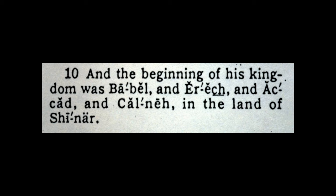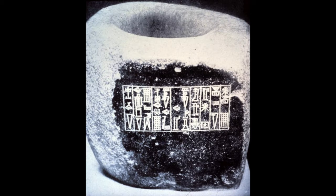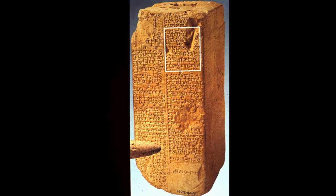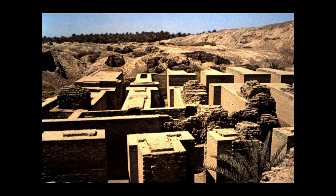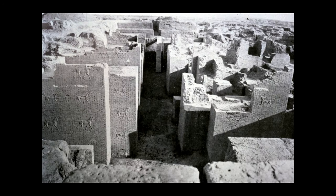Other cities mentioned in Genesis chapter 10 are Babel, Erek, Akkad, and Kauna. Prior to archaeology, critics claimed these names were invented by the Bible and were fictitious. But the existence of these cities has been confirmed by archaeologists. For example, the inscription on this ancient door socket refers to the city of Akkad, and this ancient four-sided block has a reference to the city of Erek. The reference to Babel in Genesis chapter 10 is of course to Babylon, which critics also once claimed never existed until the archaeologists dug it up.